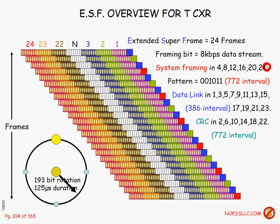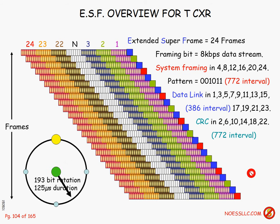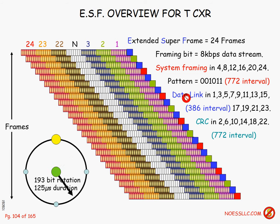The system can get enough information with that many skips — it doesn't have to be smacked in the face every frame. This framing pattern not only tells it where the frame starts but also which frame it's looking at. Bit robbing of the least significant bit for the voice channel occurs in the sixth, twelfth, eighteenth, and twenty-fourth frames — A, B, C, and D channels.